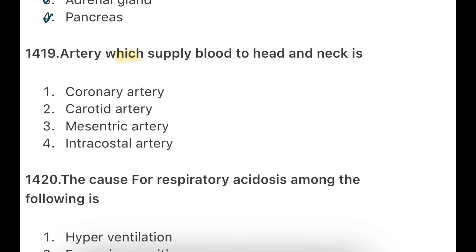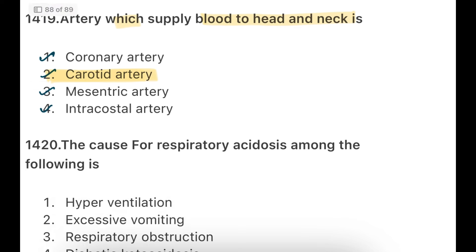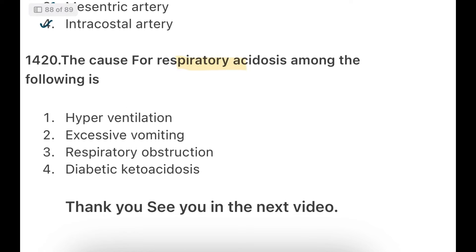Next: Which artery supplies blood to the head and neck? Options: coronary artery, carotid artery, mesenteric artery, intercostal artery. The answer is the carotid artery, which supplies blood to the head and neck. Next: The cause of respiratory acidosis among the following is — options: hyperventilation, excessive vomiting, respiratory obstruction, diabetic ketoacidosis. The answer is respiratory obstruction.